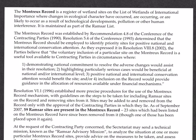Under the Ramsar convention there is also the Montreux Record. It is a register of wetland sites on the list of wetlands of international importance where changes in ecological character have occurred, are occurring, or are likely to occur as a result of technological developments, pollution, or other human interference. It is maintained as part of the Ramsar list, was established in 1990, and sites may be added to or removed from the record only with the approval of the contracting parties in which they are located.